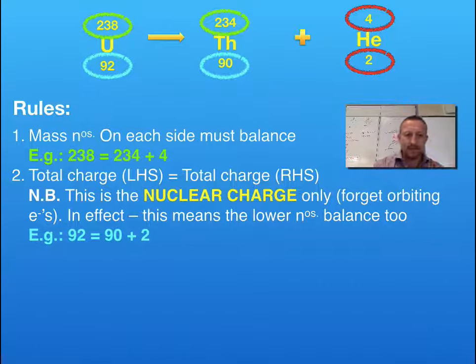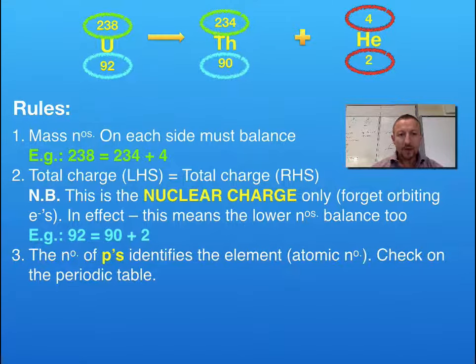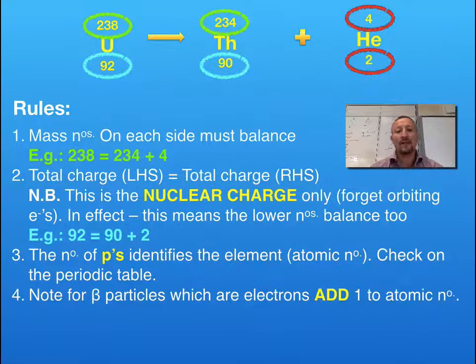So what you can see there is this conservation of atomic mass and conservation of atomic number. Whatever's on the right must equal what's on the left. Once we know our atomic number we can then determine what our element is by using the periodic table. So the number of protons identifies the element and as I say we can pick that up from the periodic table.